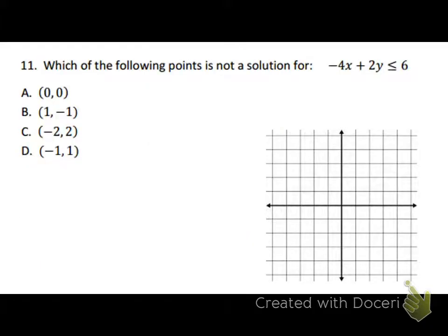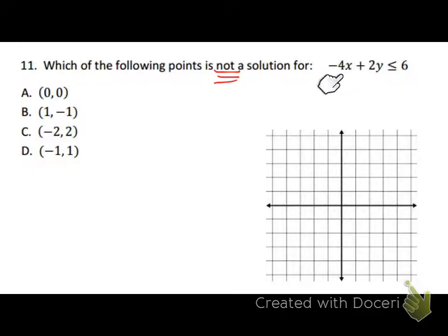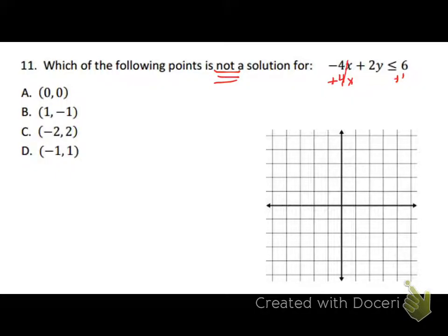Next question: which of the following points is NOT a solution for this inequality? There are two different ways we could solve this — we're going to look at both. The first is graphing. To graph this, we need to get it into slope-intercept form first, so let me solve the inequality for y.